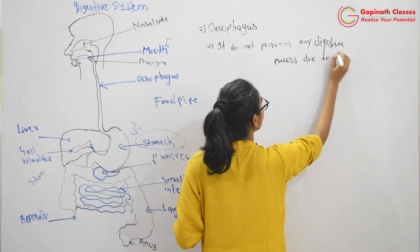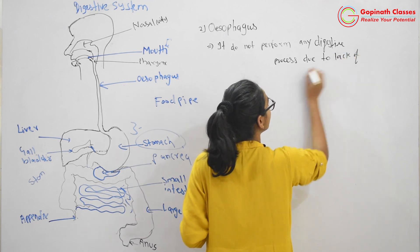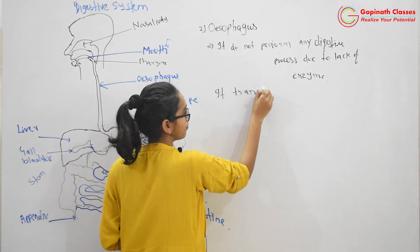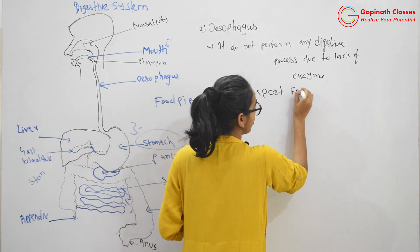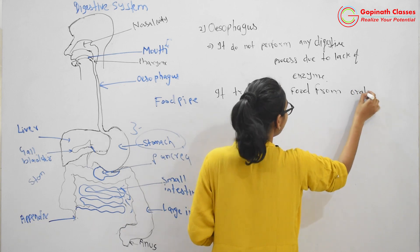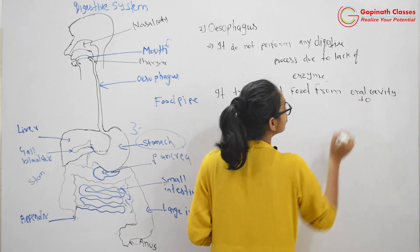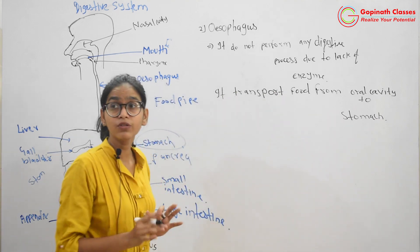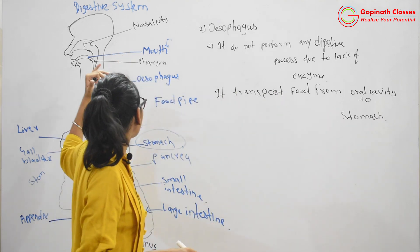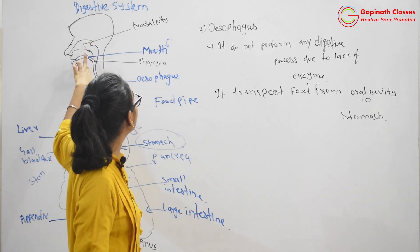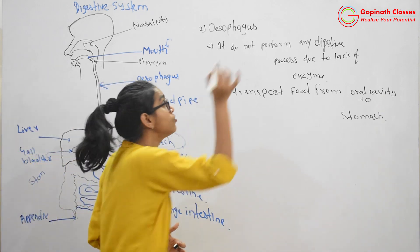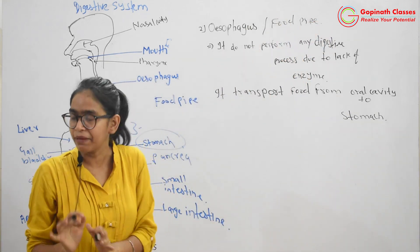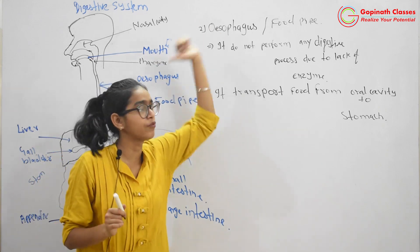So it does not perform any digestive process due to lack of enzyme. Its function is it transports food from oral cavity or buccal cavity to stomach. So digestion does not happen in esophagus. Its function is it transports the food from the oral cavity to the stomach. That's why esophagus's general name is food pipe. And please do not use this word. It's just a general name. Whenever you write the answer, you always use the word esophagus. It's very important.